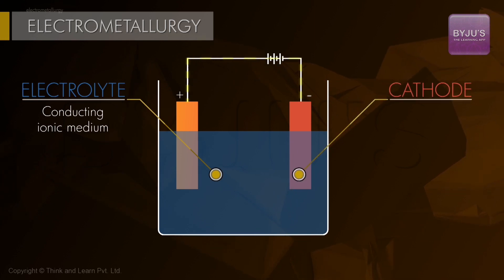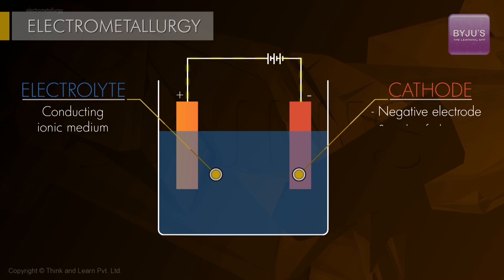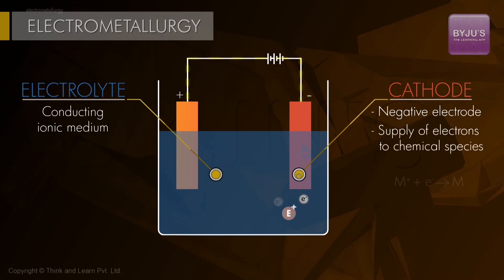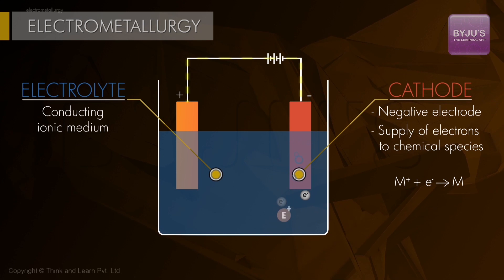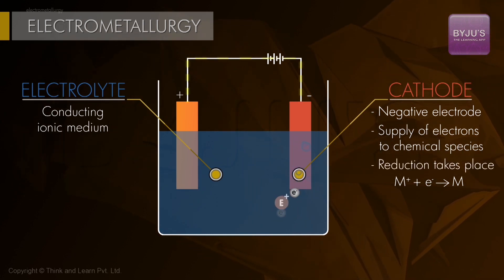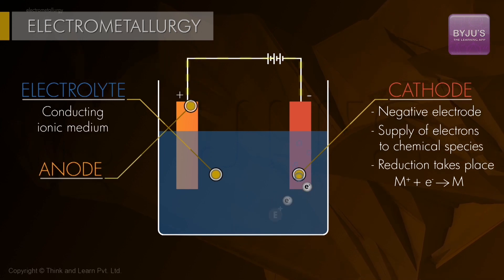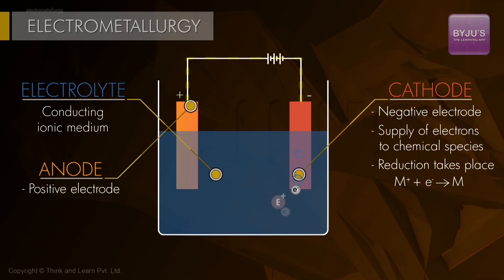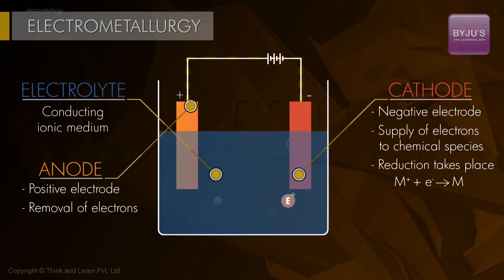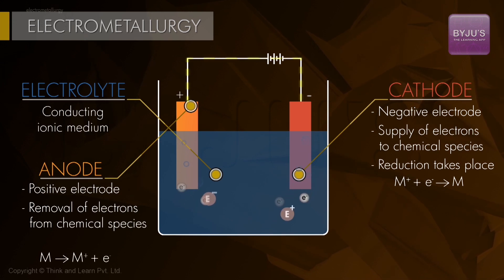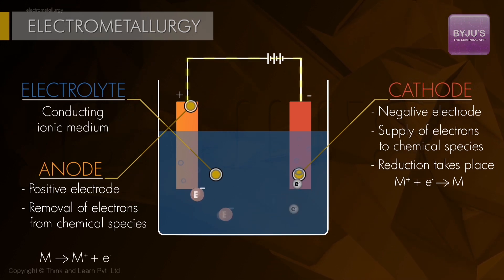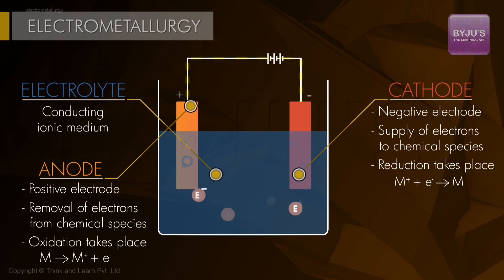At the cathode, or the negative electrode, there is a supply of electrons to a chemical species — in other words, a chemical substance gains electrons, or reduction takes place. At the anode, which is the positive electrode, there is a removal of electrons from a chemical species; in other words, a chemical species loses electrons, or oxidation takes place.